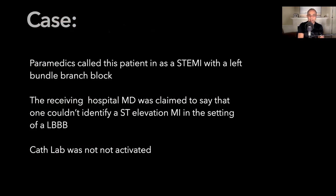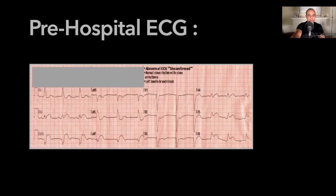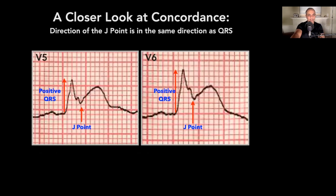Because of that, the cath lab was not activated. Go ahead and take a look at this ECG, and let's look at concordance. What concordance means is that the J point goes in the same direction as the QRS complex.